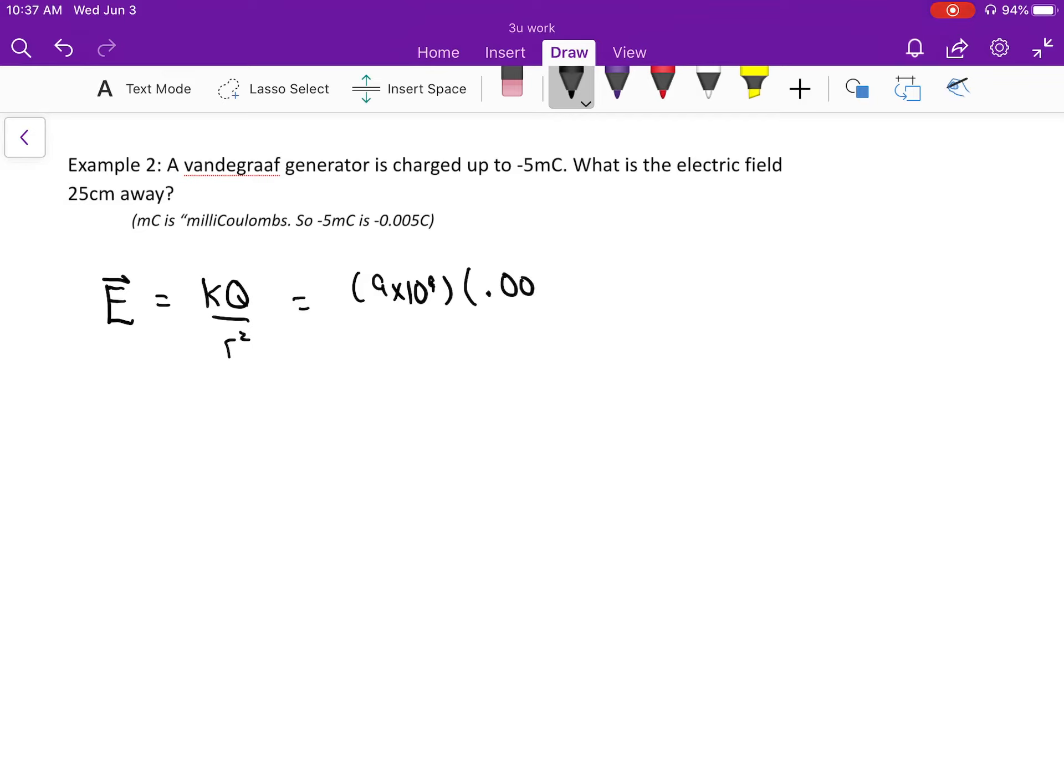So 0.005, then all that divided by the r squared. The r in this case was 0.25, once we put it in meters.